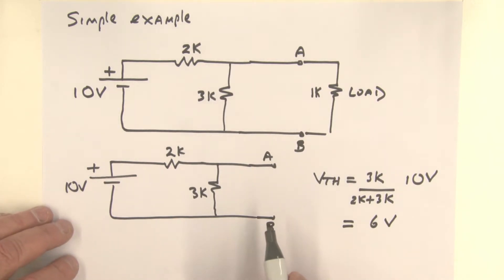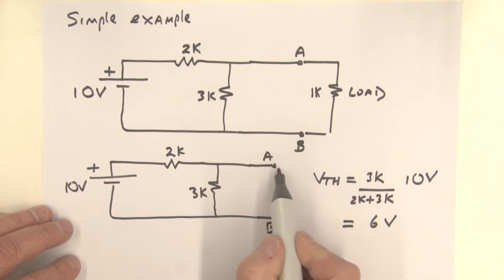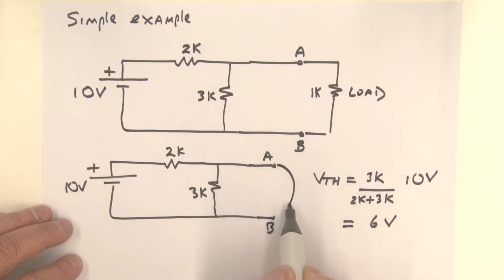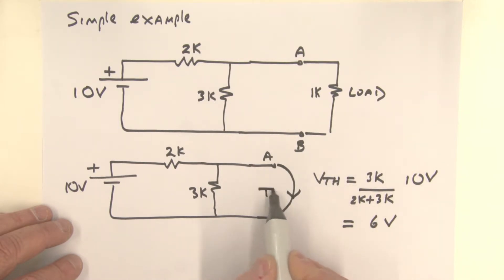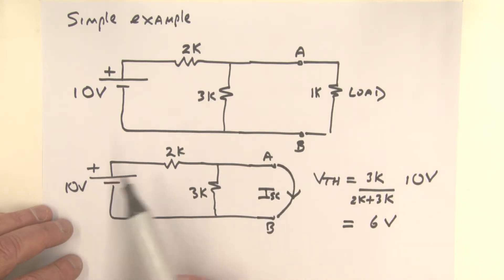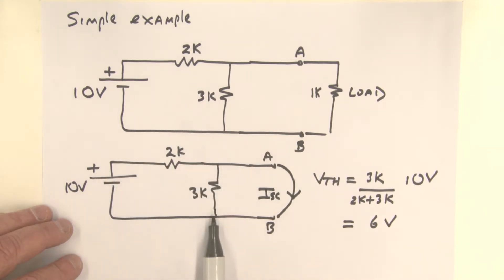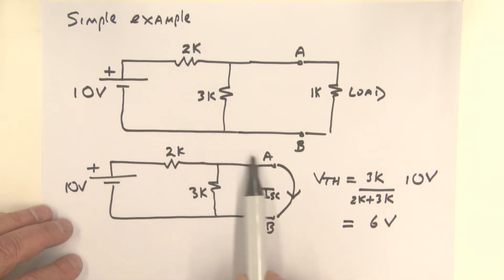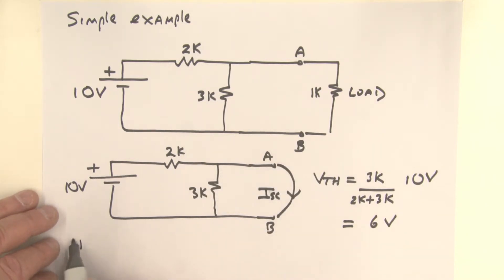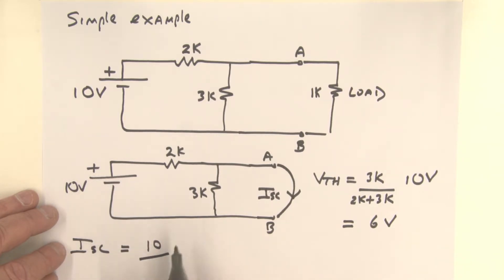To calculate the Thevenin resistance, one way is to find the short circuit current. We effectively put a short between terminals A and B and calculate that current, which we're calling I short circuit. The current flows through the 2K resistor only — no current goes through the 3K — so I short circuit equals 10 volts divided by 2K, which gives a current of 5 milliamps.